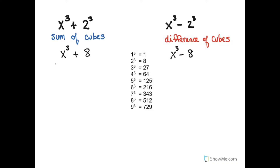Now x plus 2 is a factor of x cubed plus 8, times something else that we don't know yet. I'm just telling you because I know already, and we're going to find the other part. And x minus 2 is a factor of x cubed minus 8, and the rest is something that we don't know yet. So that's pretty easy to remember. Let's find the rest.